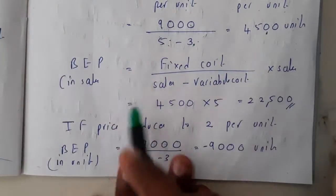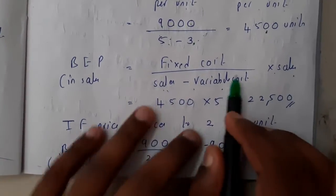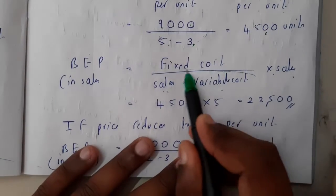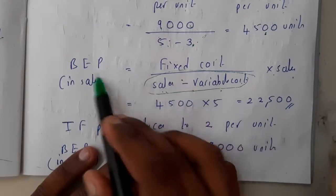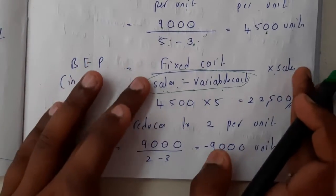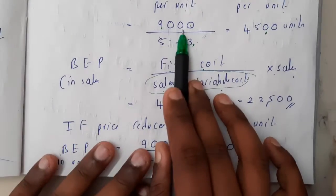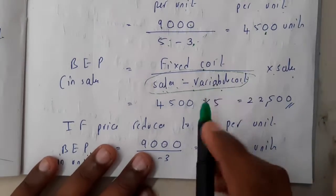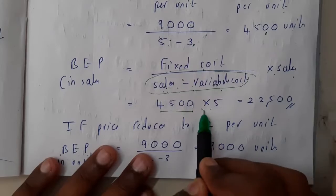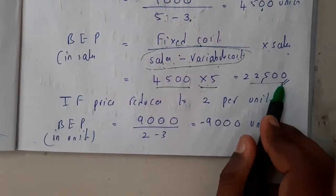For BEP in sales, the formula is fixed cost divided by (sales minus variable cost into sales), which simplifies since contribution divided by sales is the PV ratio. So BEP in sales = fixed cost divided by PV ratio. Fixed cost is 9,000, contribution is 2, so 9,000 divided by 2 = 4,500, multiplied by selling price of 5 gives 22,500.